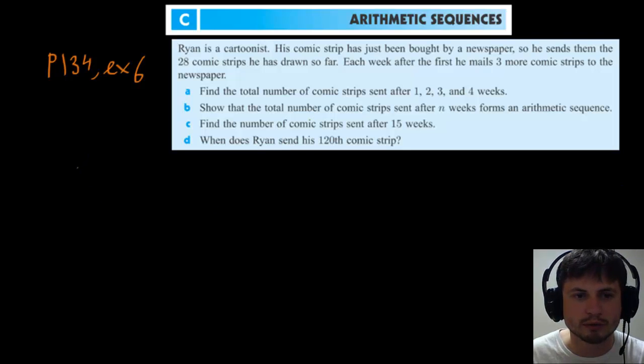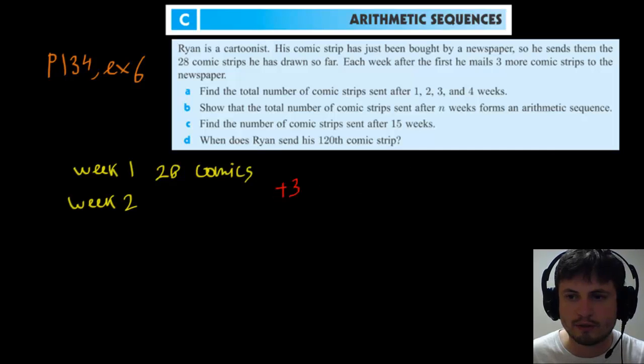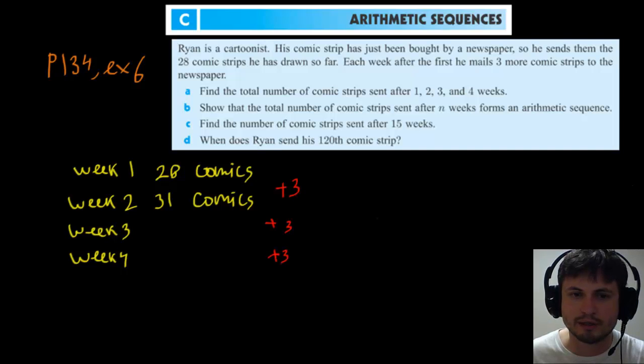So we already know that on week one, he's already sent them 28 comic strips, 28 comics. So that's on week one. Week two will be plus three, so this will be 31 comics. Then for week three and for week four, we can pretty much do the same, so plus three plus three. So d here is three and we find that this is going to be 34 and this is going to be 37. And that's really the answer for a, so a is done. We can check it off.